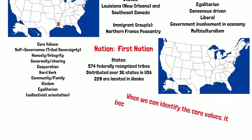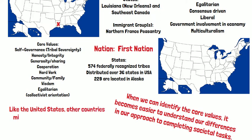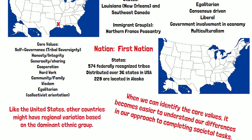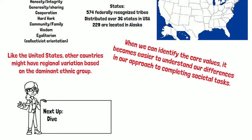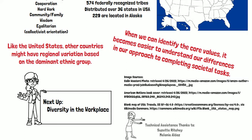When we can identify the core values, it becomes easier for us to understand our differences in our approach to completing societal tasks. Like the United States, other countries might have regional variations based on a dominant ethnic group, and it would be worthwhile if you are planning to travel to another country to see if there aren't these regional variations and cultural patterns. Next up we're going to take a look at diversity in the workplace and some of the ideas of Geert Hofstede.